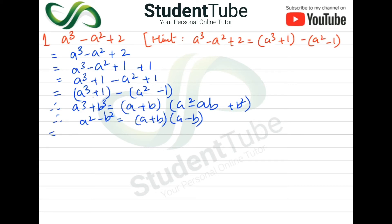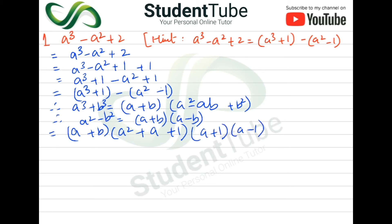So first, a³ plus 1 will be applied to the a³ plus b³ formula, which will be a plus b times a² plus a and b. So a will remain, and since b is one it becomes plus one. Next, a² minus 1 will use the a² minus b² formula, so here will be a plus one and a minus one.